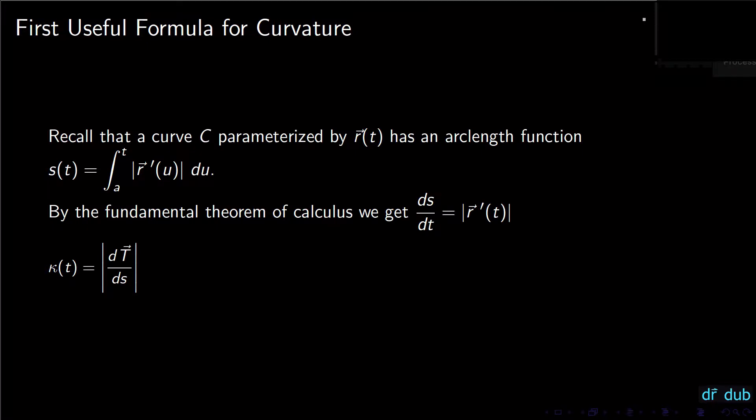The first formula is going to be derived using the arc length function. The arc length function, if you recall, is S(t) equals the integral from A to T of the magnitude of R'(u) du. The curve C is parameterized by R(t) and the starting point is R(A). By the fundamental theorem of calculus, dS/dt equals the magnitude of R'(t).